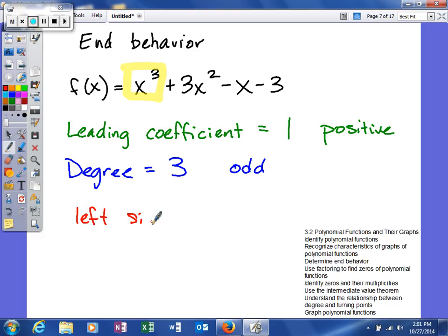The left side will fall, and the right side of our graph, or the right end, will rise.